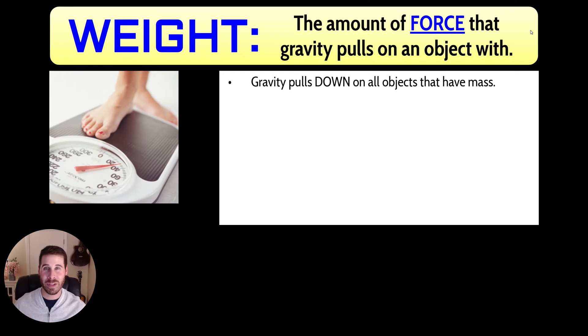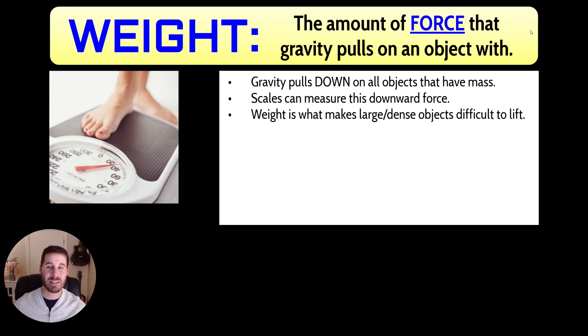And even that really is an oversimplification. Gravity pulls objects towards each other's centers. And because to us, the earth is below us, it seems like gravity pulls down. Scales are something that we use commonly to measure this downward force of gravity. And you should know that it's weight that makes large or dense objects difficult to lift. It's not necessarily that an object has lots of mass and therefore it's hard to lift. It's the weight of the object that makes it challenging to lift up.